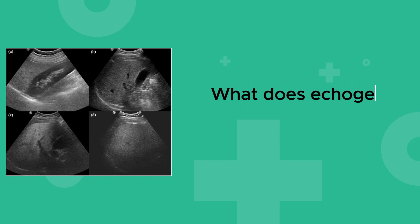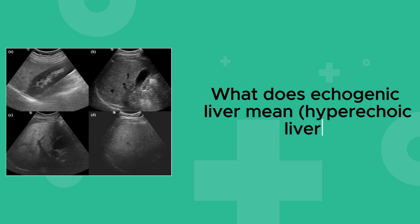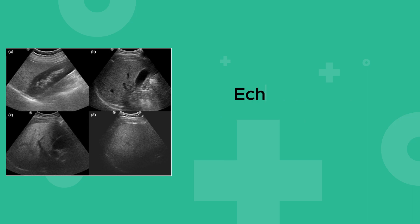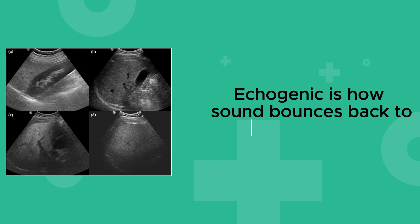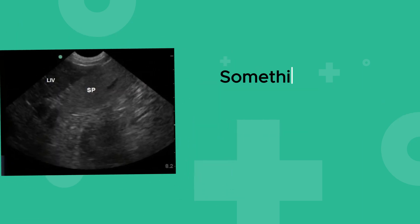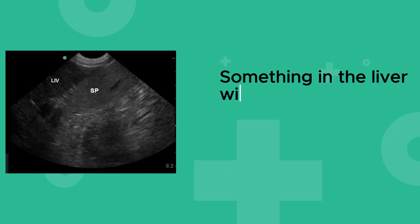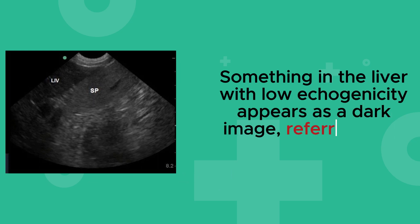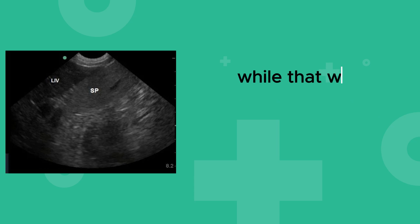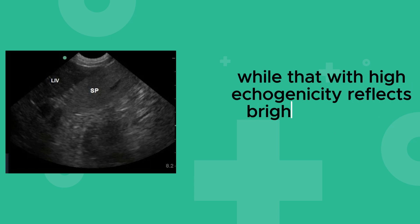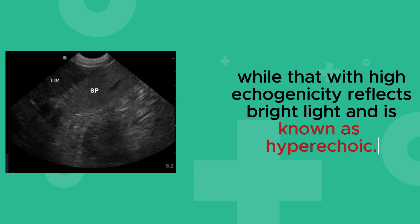What does echogenic liver mean? Hyperechoic liver? Echogenic refers to how sound bounces back to form an image. Something in the liver with low echogenicity appears as a dark image, referred to as hypoechoic, while that with high echogenicity reflects bright light and is known as hyperechoic.